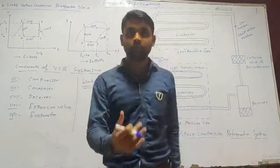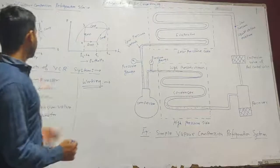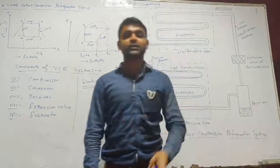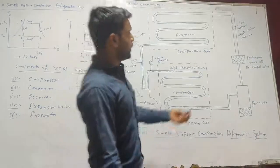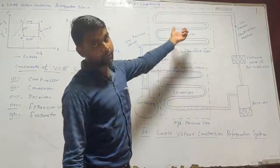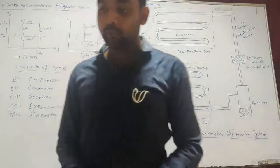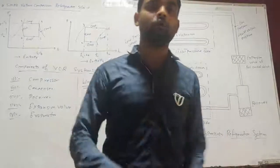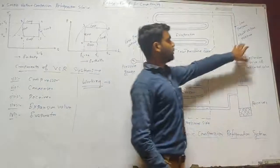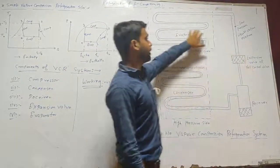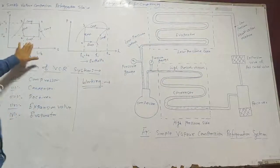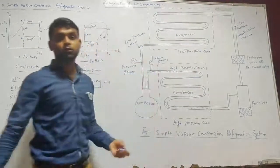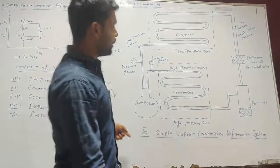During expansion, the temperature and pressure decrease, and the liquid refrigerant changes into a low pressure liquid-vapor mixture. From the expansion valve, the refrigerant comes to the evaporator. The evaporator absorbs the latent heat of vaporization from the medium. At constant pressure and constant temperature, the refrigerant changes to vapor and then circulates back to the compressor. This is how the cycle continues.